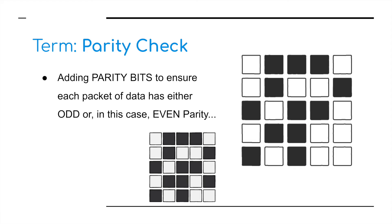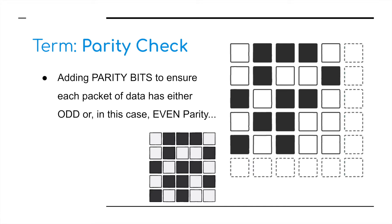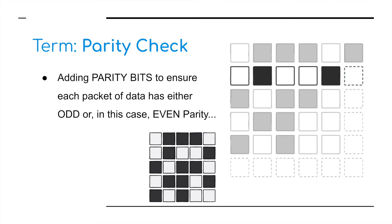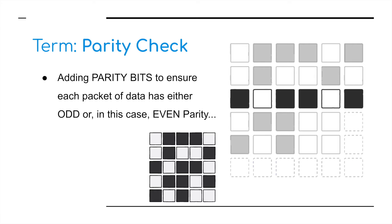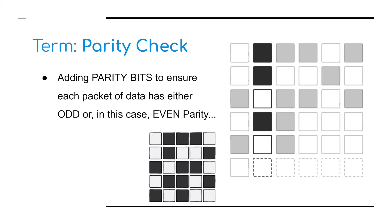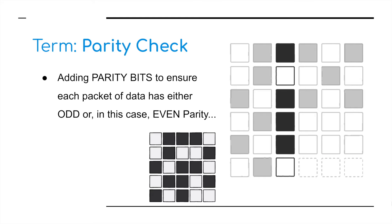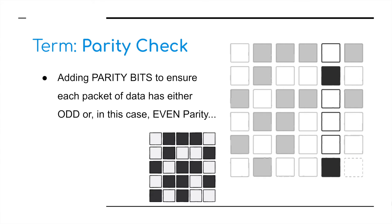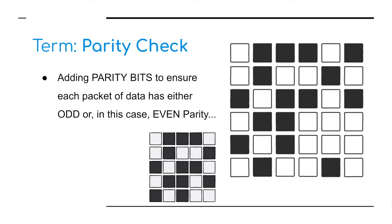Not only can we do parity checks on bytes of information, we can also do it on data packets. I've got an example here — I'm going to add an additional column at the end and an additional row at the bottom, and then colour the squares using even parity. We're filling this in, adding either a black square or a white square depending on whether it's odd or even parity, and then at the bottom row I'm going to do exactly the same, so my entire packet contains even parity.